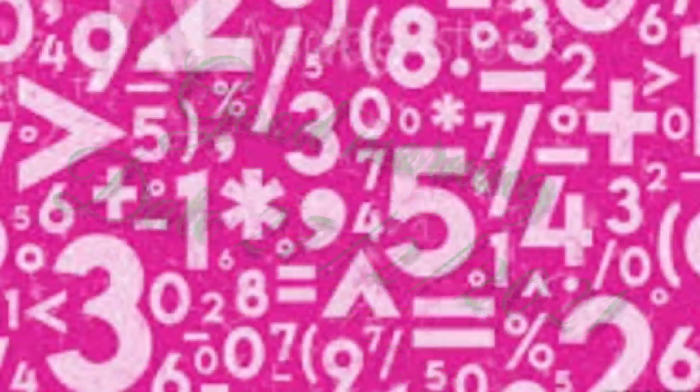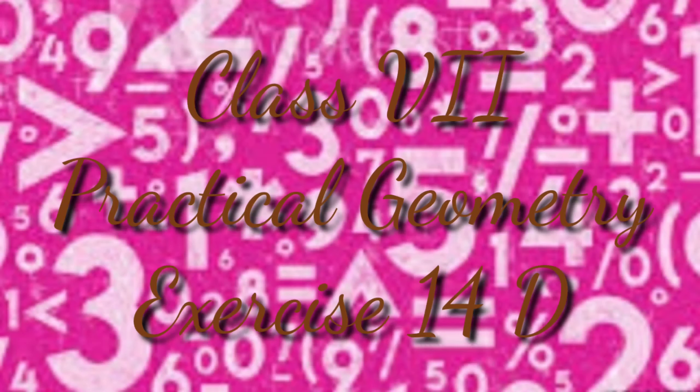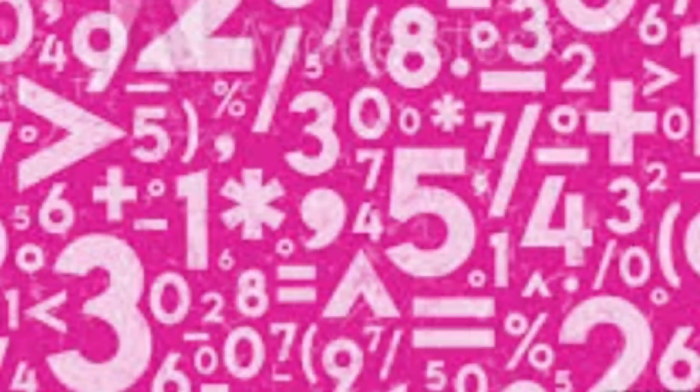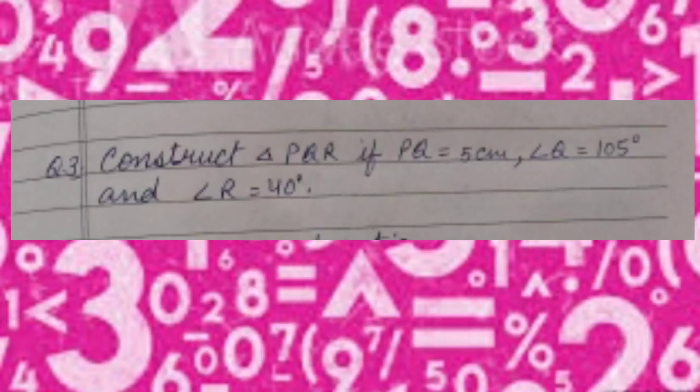Good morning students. Let's resume exercise 14D, question number 3. Construct a triangle PQR if PQ equals 5 cm, angle Q equals 105 degrees, and angle R equals 40 degrees.